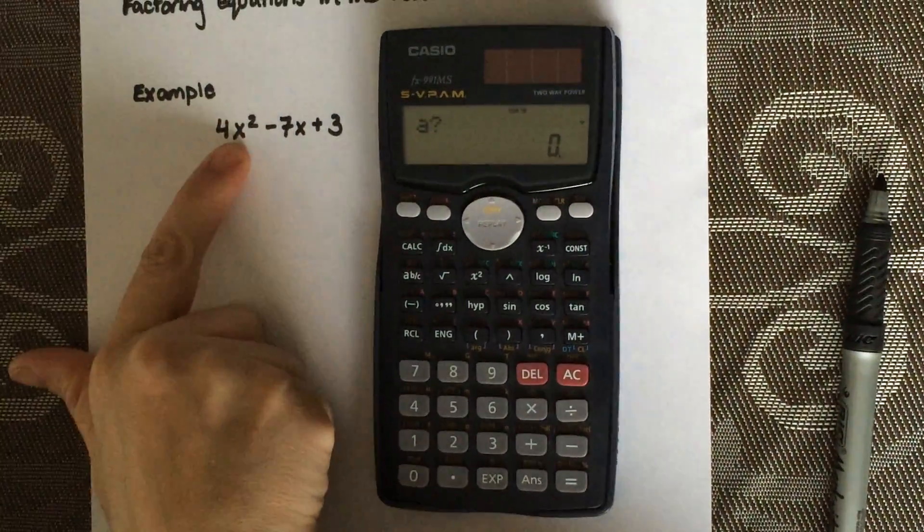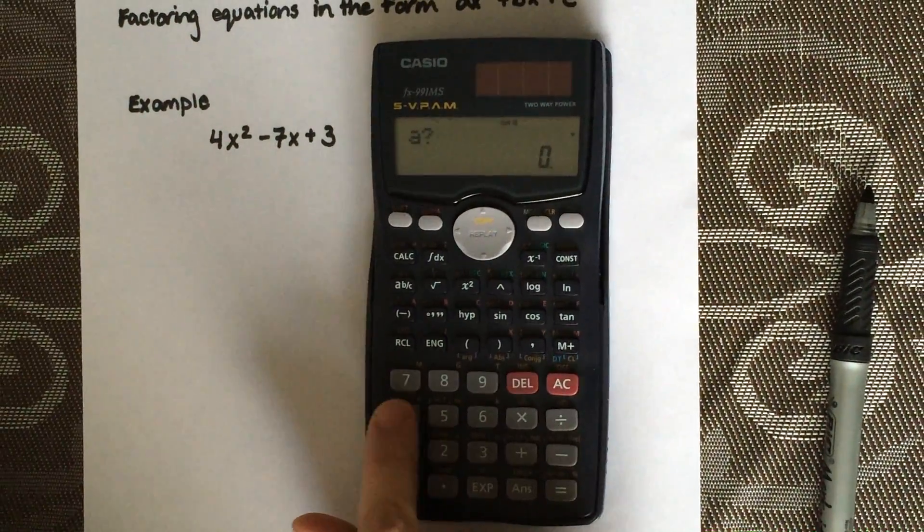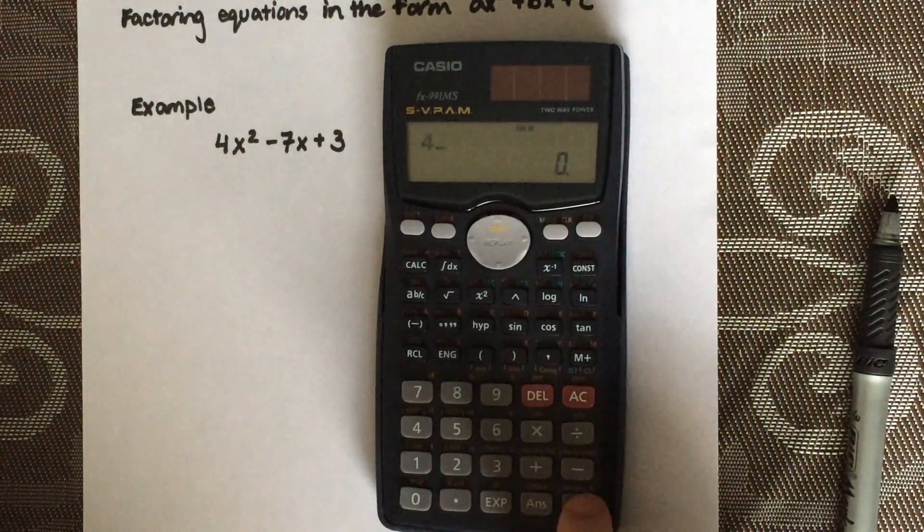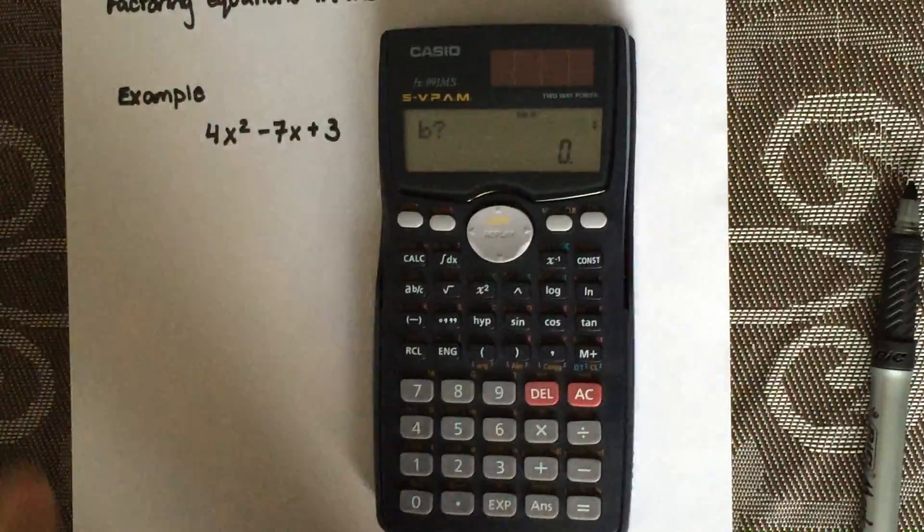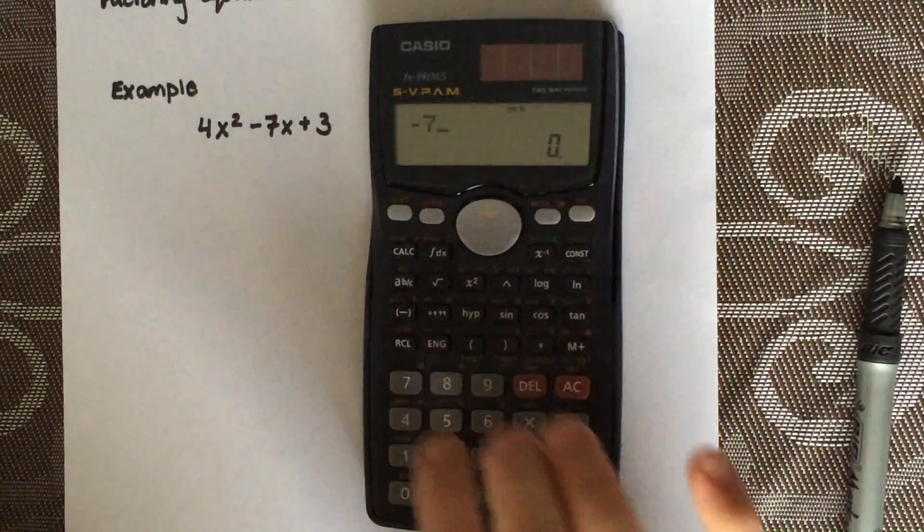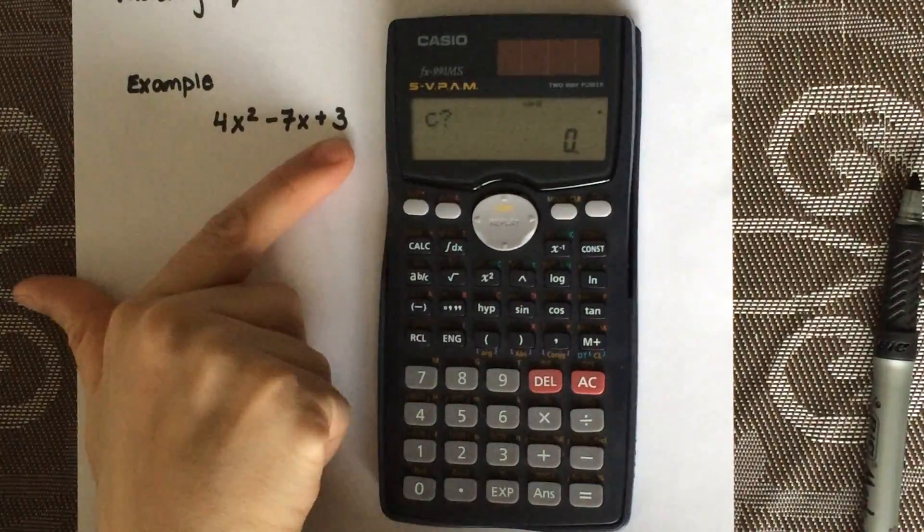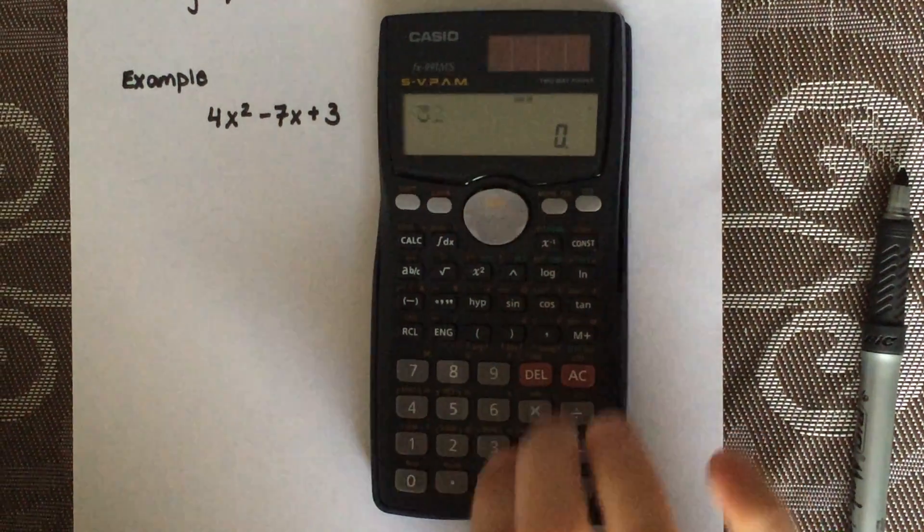The A value is the value in front of the X squared, so 4. Enter. The B value is negative 7, which is the value in front of the X. And the C value is just your number, which is 3.